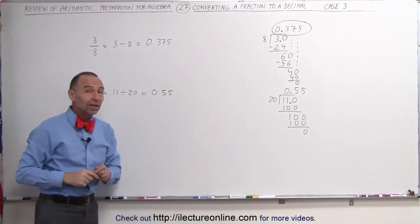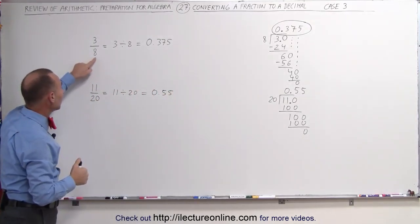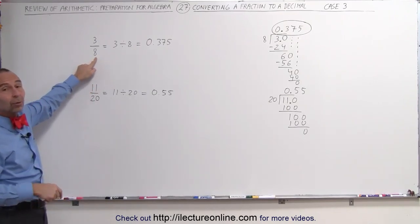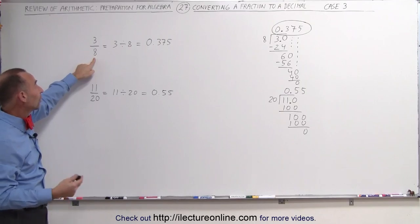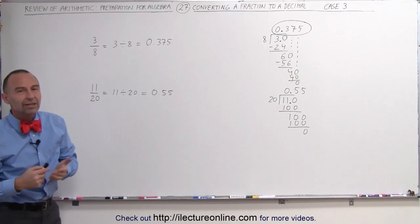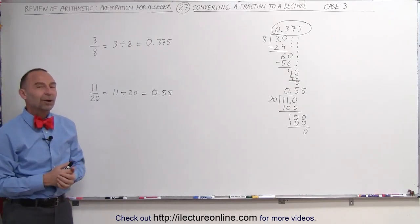So when all else fails and you can't see that the denominator fits evenly into, let's say, 10, 100, or 1,000, and maybe this is not quite clear that 8 does fit into 1,000 evenly, you simply go ahead and do a longhand division and you then turn the fraction into a decimal that way.